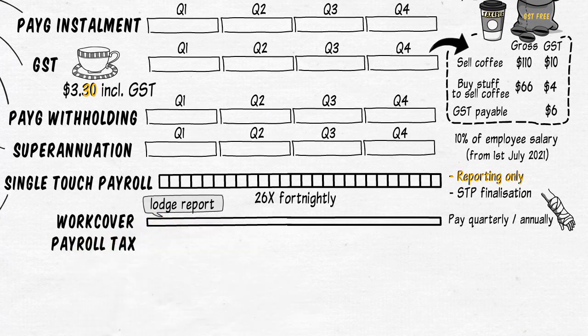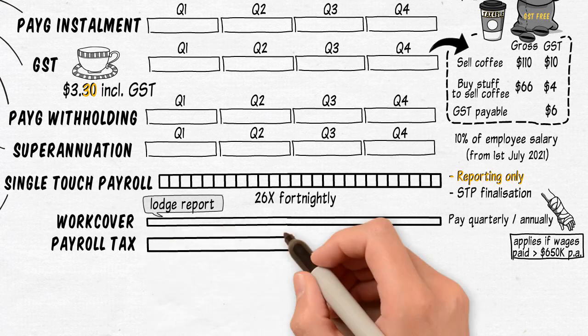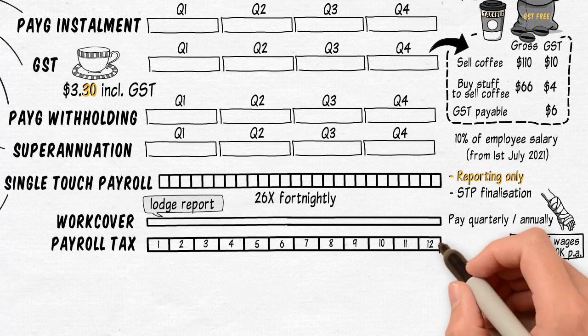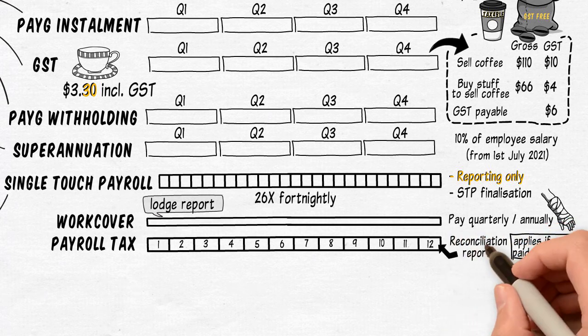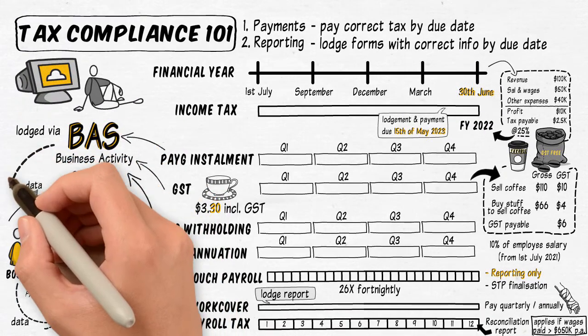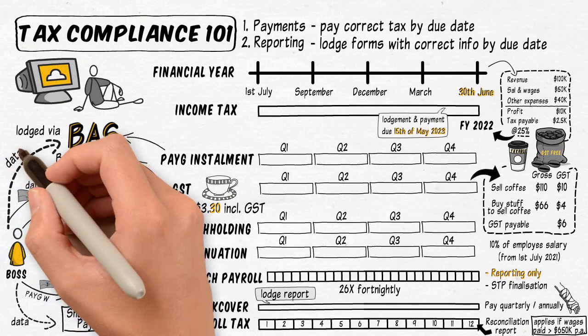Then there's payroll tax, but it's unlikely to apply to you because it only applies to employers with employee wages of more than $650,000 per year. But if it does apply, you need to pay and report payroll tax to the State Revenue Office every month, and at the end of the year you lodge a reconciliation report matching everything from the last 12 months.